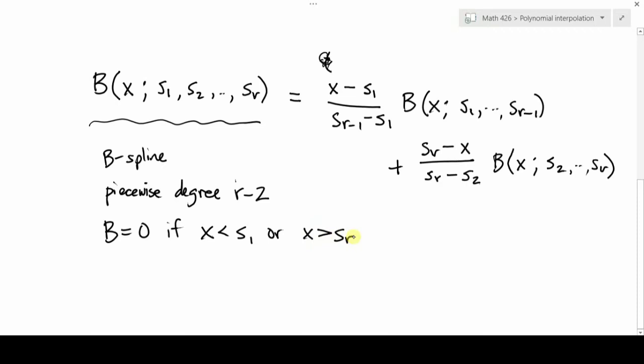So remember the hat functions, one of the nice things is that they were all locally contained. That's true of these too, although they're spread out over more of these knots.